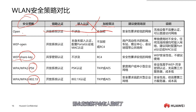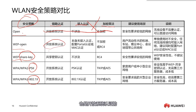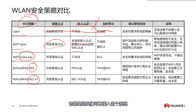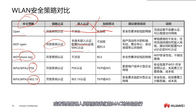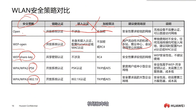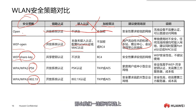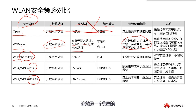The second type is WEP open, which also uses open system authentication on the link. But for access, we can pair it with portal or MAC authentication. We can connect to the system, but we need to perform an action on a page — for instance, entering a verification code or having an administrator pre-approve our MAC address. A familiar example: in airports and train stations, after connecting to the Wi-Fi, you still need to enter your mobile number on a web page, then enter a verification code and submit before you can access the internet. This is a typical security strategy similar to WEP open.